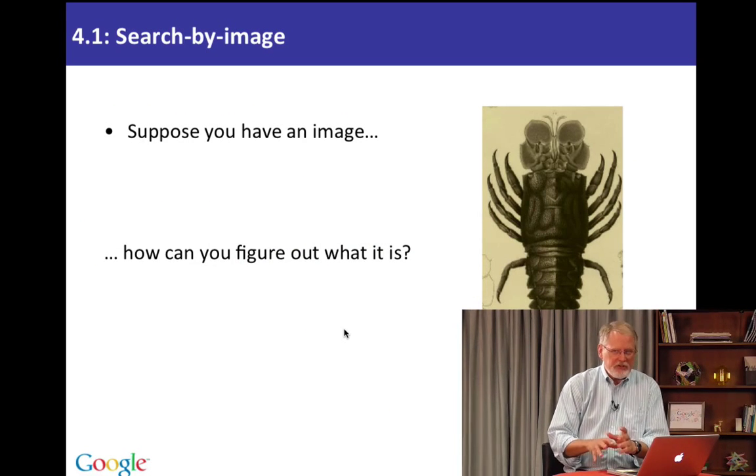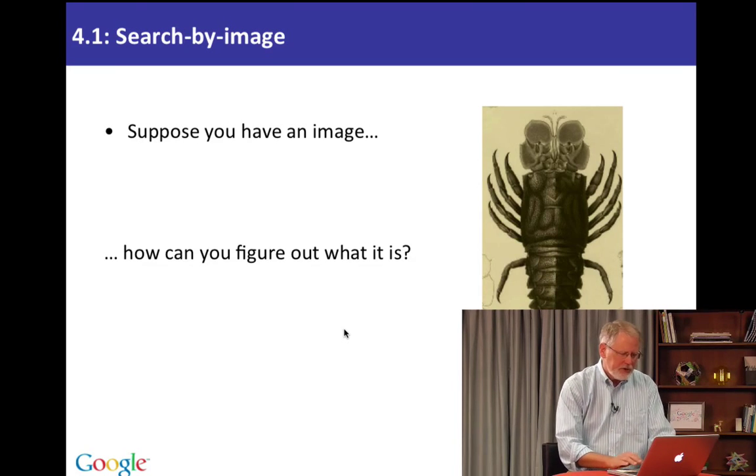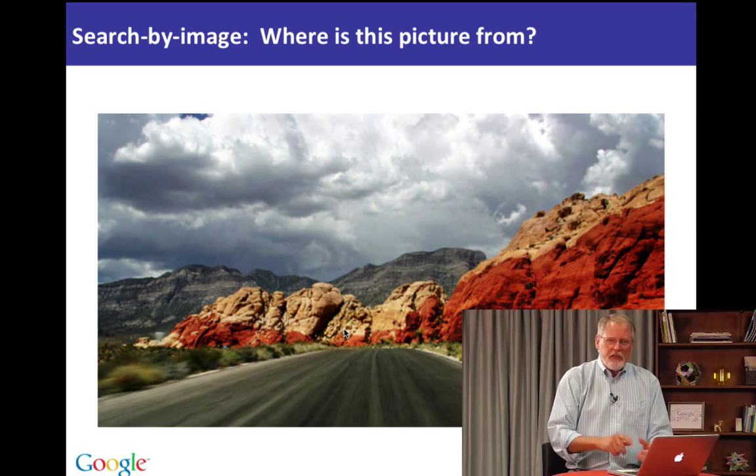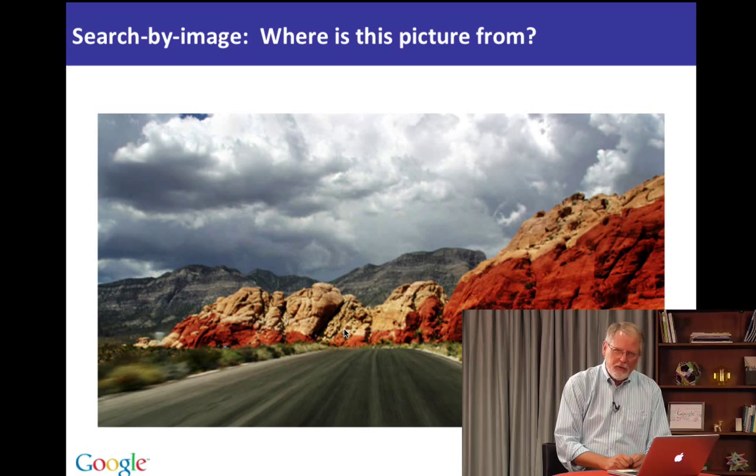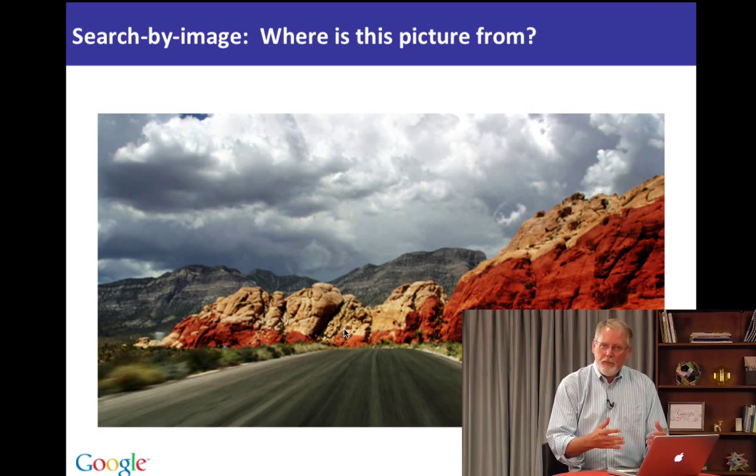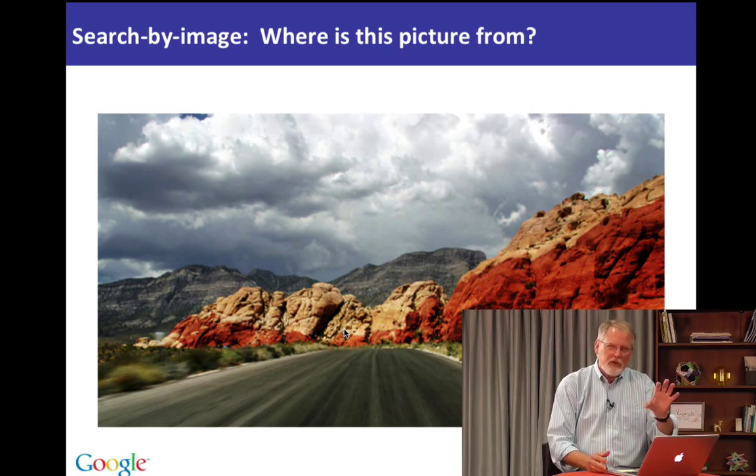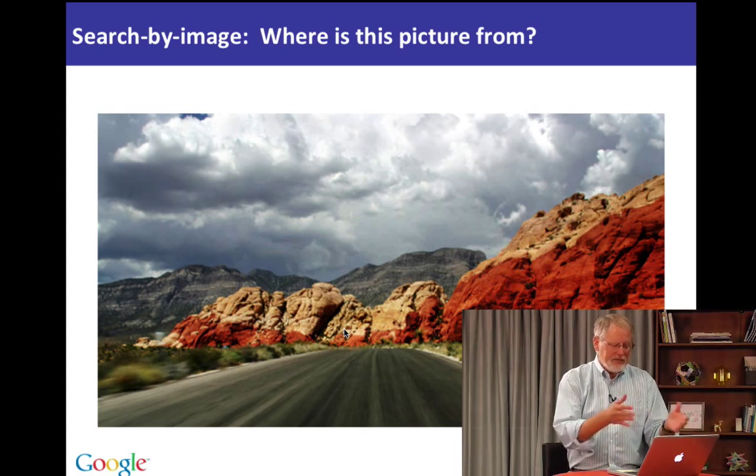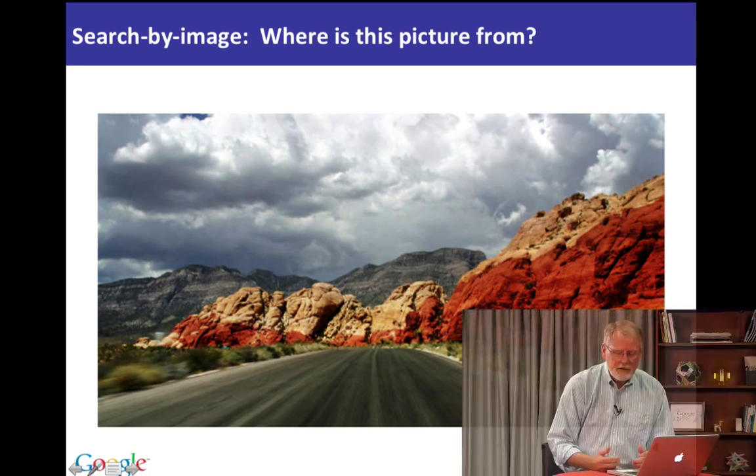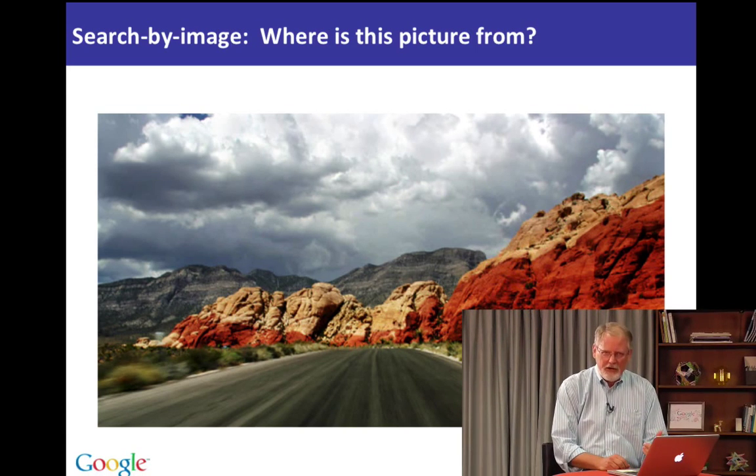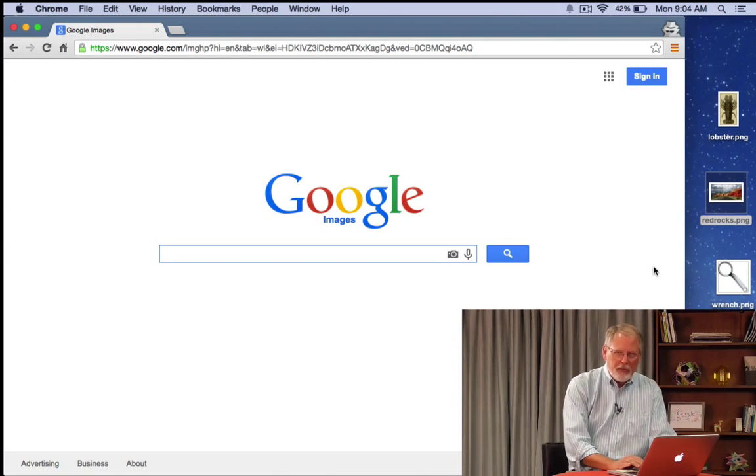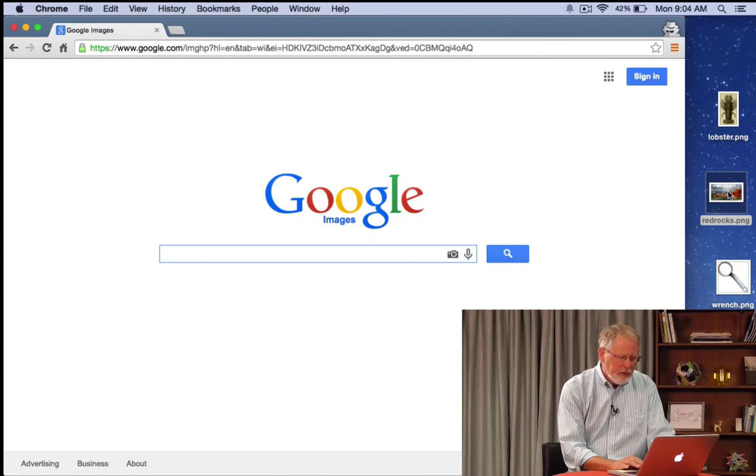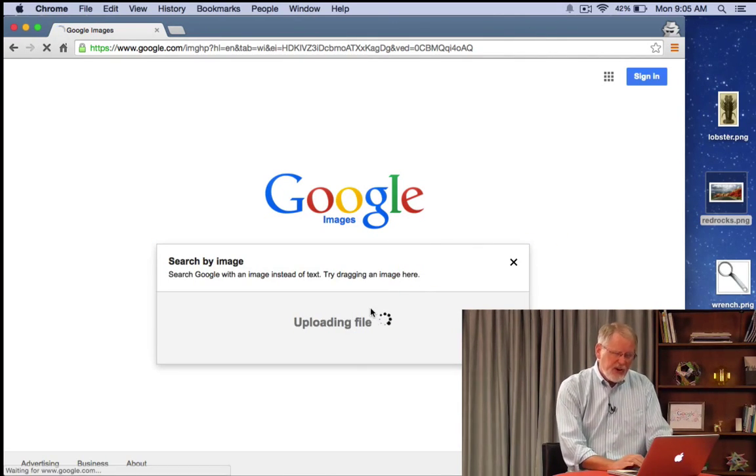So now we've figured out what this image is just by doing a simple drag and drop operation. The other thing that Search by Image allows you to do is to find out where images come from. So in the previous example, we looked for that image and found it was in a book. But how about this one? This is a beautiful place somewhere in the world, but where? So we're going to do the same thing here. We're going to drag and drop that beautiful image into Google Image Search and try to figure out where it is.